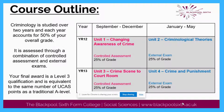So what would the course look like? Over the two years, both year 12 and year 13, you will study four units. As you can see from the table, in year 12 you study unit 1, changing awareness of crime, and unit 2, criminological theories. These two units combined account for 50% of your overall grade.